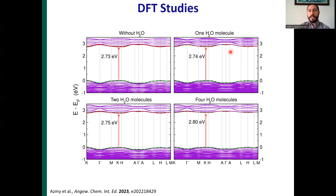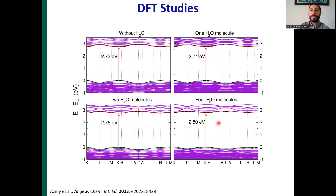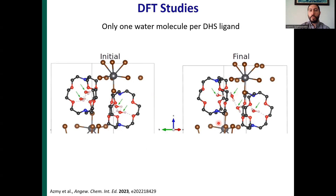To investigate the electronic properties, we performed DFT studies. The compound is a direct band-gap semiconductor. Comparing the band structure of the pristine material without water to structures with gradually one, two, and four water molecules — where four water molecules per four ligands represents 100% water loading — there is only a minuscule difference in band dispersion, meaning water inclusion has minimum impact on the electronic properties. DFT also confirmed that only one water molecule can remain inside the cavity; the rest are expelled to interstitial space, in perfect agreement with vapor sorption studies identifying one water molecule per organic ligand as total uptake.